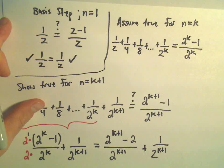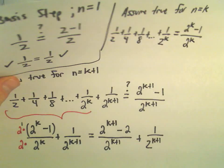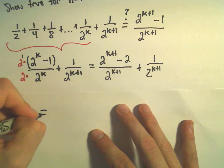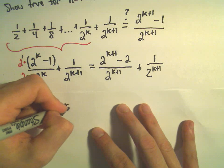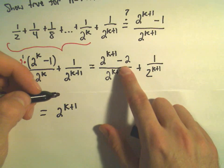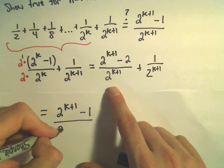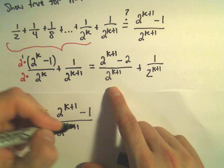Well, now that we have common denominators, we can simply add the left sides together. So, if we do that, it looks like we'll get 2 to the k plus 1. If we take negative 2 plus 1, that'll give us negative 1. We have our denominator of 2 to the k plus 1.